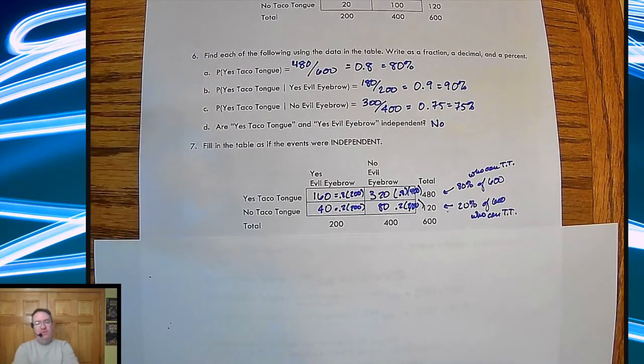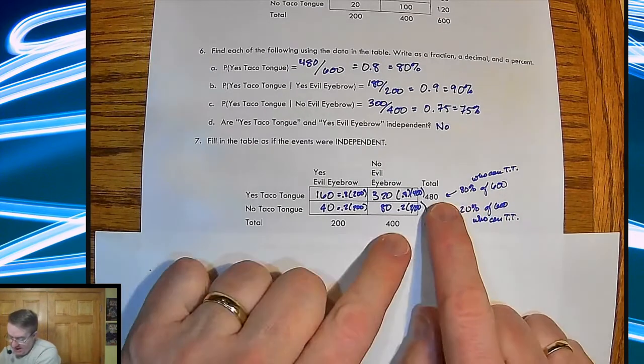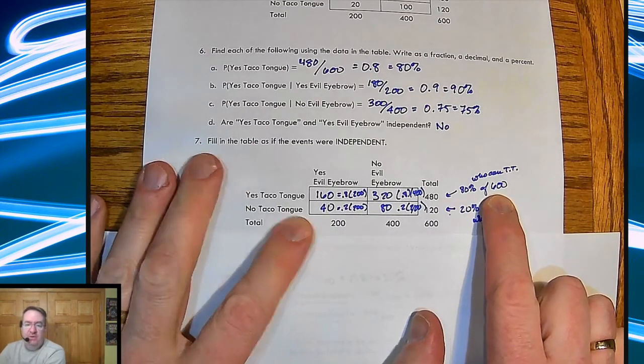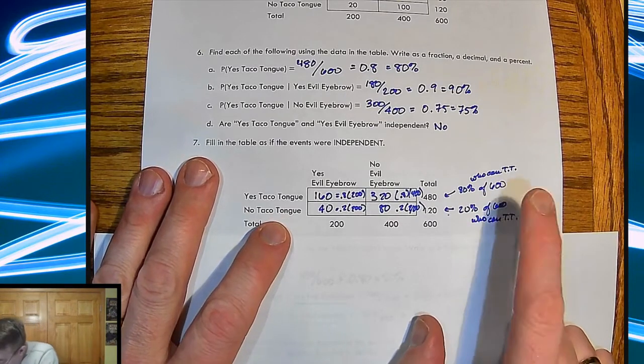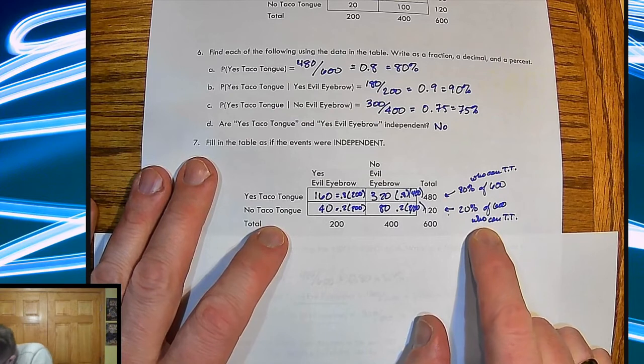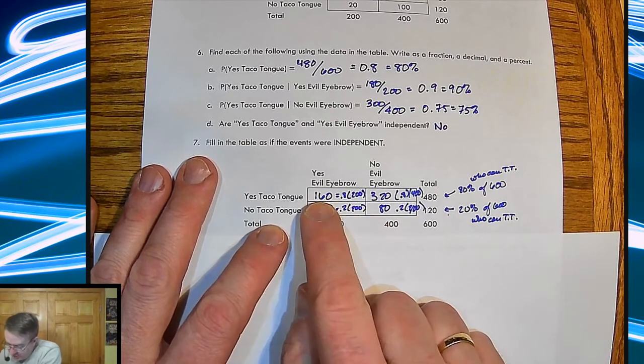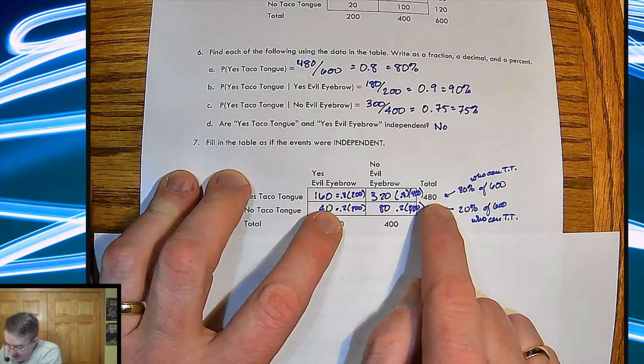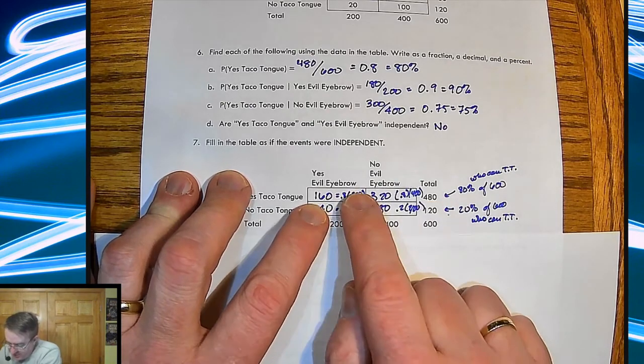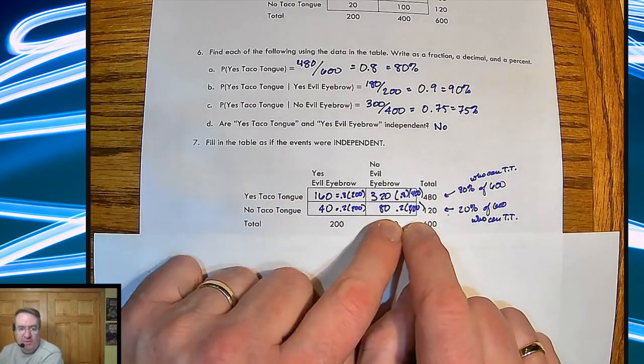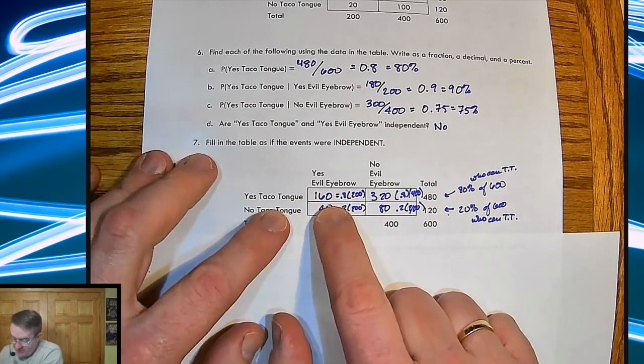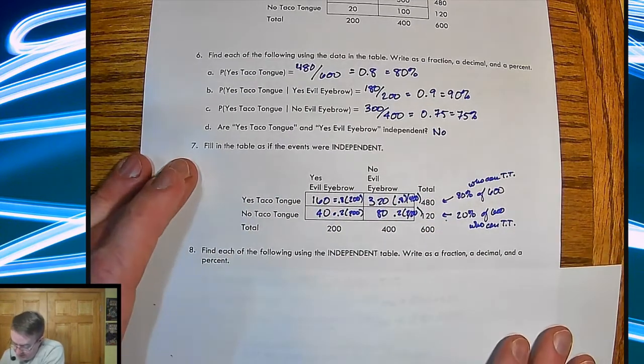All right. Fill in the table. So now here, you're going to fill in the table as if it were independent. So to do that, 80% of our 600 people can taco tongue. 20% of our people cannot taco tongue. And so because of that, I'm going to go through right here. So what's going to end up happening is that this 80% breakdown should be the same both with the evil eyebrow crowd and the not evil eyebrow crowd. And so these are the numbers that we should get.